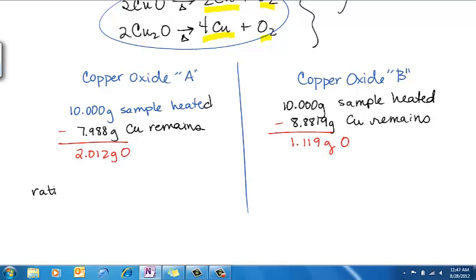Well, first we're going to make a ratio of grams of copper to grams of oxygen. So in this case, we have 7.988 grams of copper for 2.012 grams of oxygen, which gives us, if we reduce it, 3.9770 grams of copper per 1 gram of oxygen.